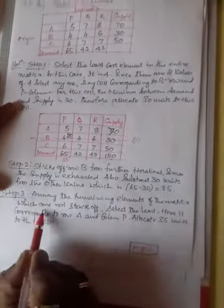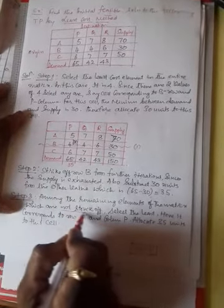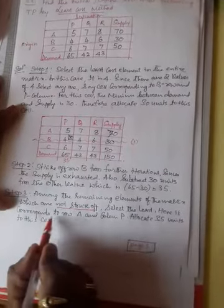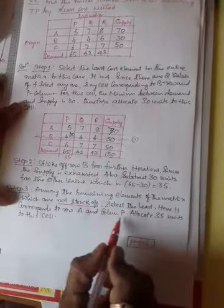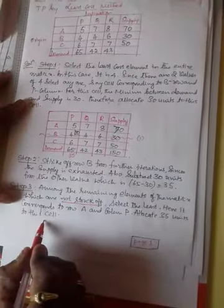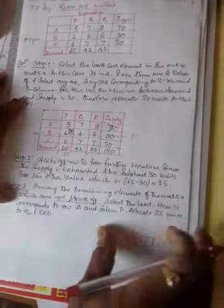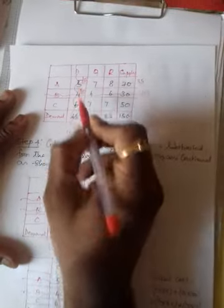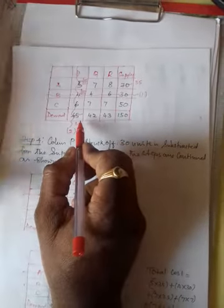You can defer from the first operation and come to the second one. Among the remaining elements of the matrix which are not struck off, select the least. Here it corresponds to row A and column P. Allocate 35 units to this cell. Come to the second table here, therefore, 35 is allocated.